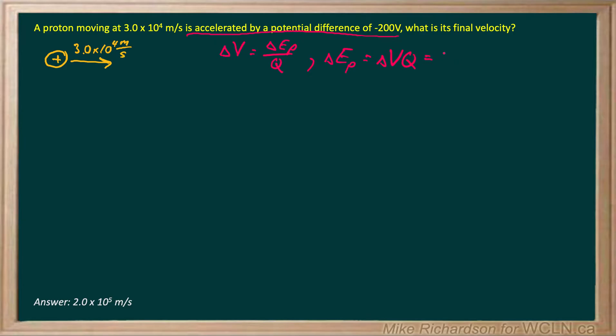So in this case I've got negative 200 and my charge is the charge of a proton, 1.6 times 10 to the negative 19 coulombs. When I work that through I get 3.2 times 10 to the negative 17.